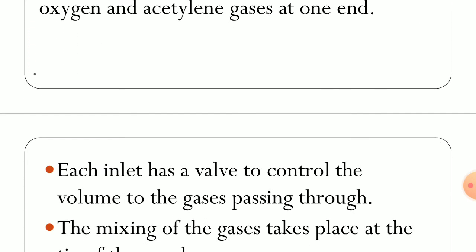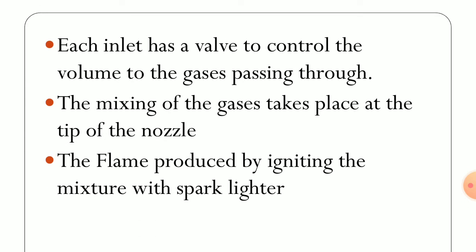The picture above represents all the minute instruments present on the oxy-acetylene gas welding process setup. Each inlet has a valve to control the volume of gas passing through it. We saw regulating valves on both the cylinder and the welding torch. The mixing of gases takes place at the tip of the nozzle.